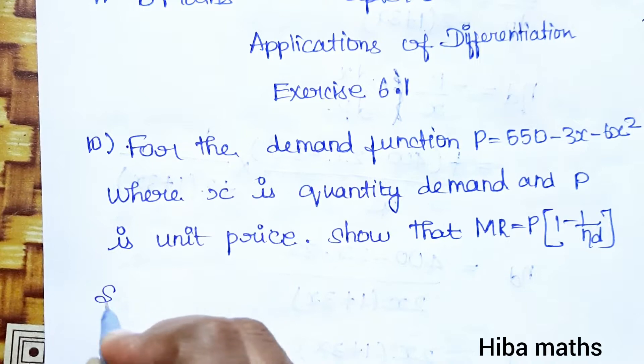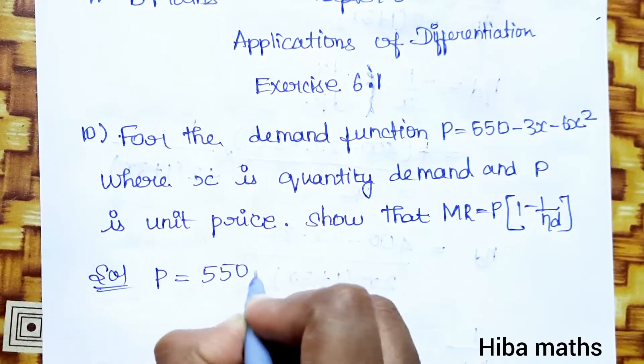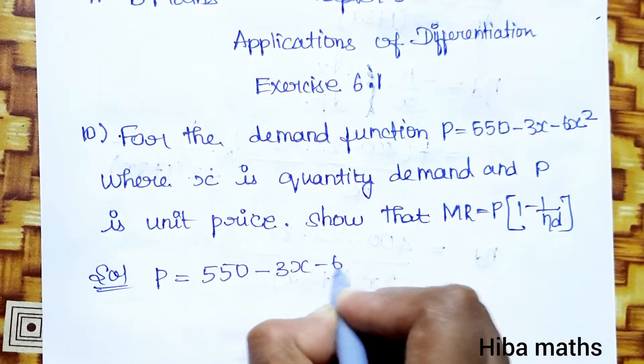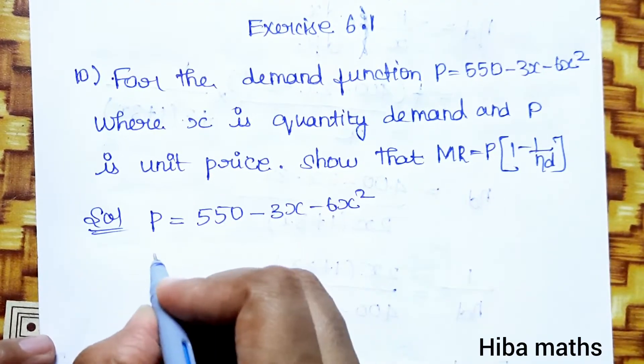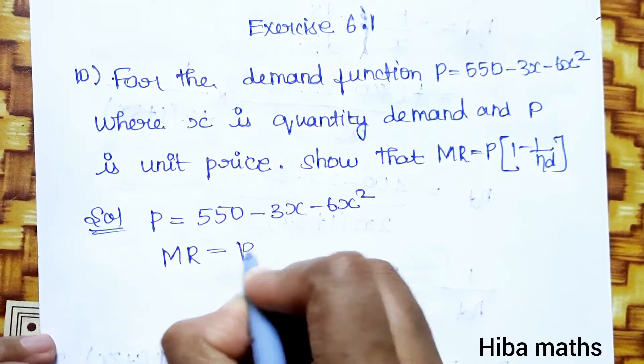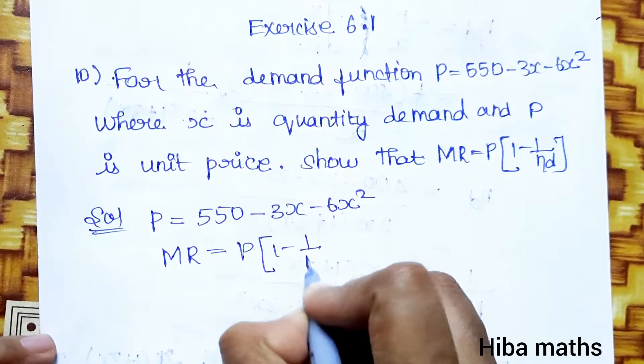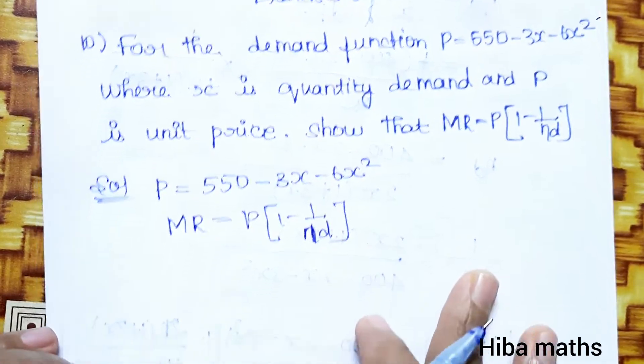Solution: P equals 550 minus 3x minus 6x square. MR should be equal to P into 1 minus 1 by eta d. We know that R, the revenue function, is equal to P into x.